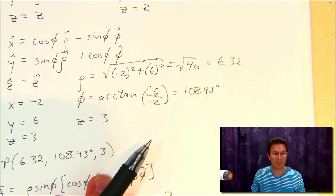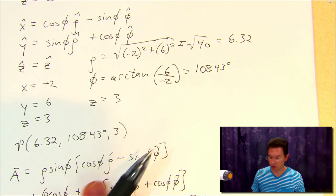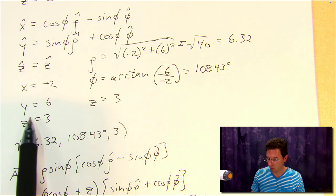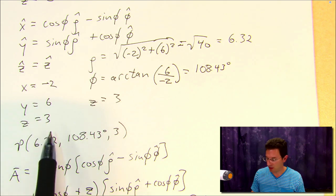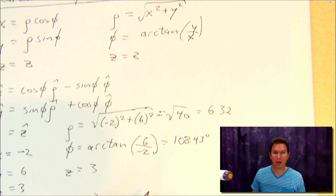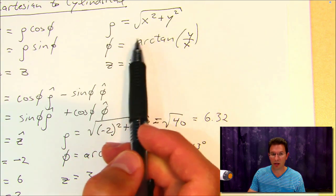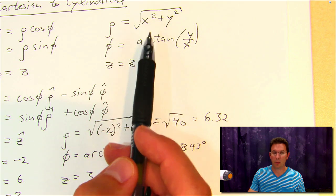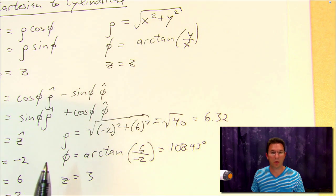In order to do that, we recognize that for this example, x is minus 2, y is 6, and z is equal to 3. So we can come over here to the right-hand side of these expressions and simply plug in the appropriate values for x, y, and z, and we're done. So let's do that real quick.